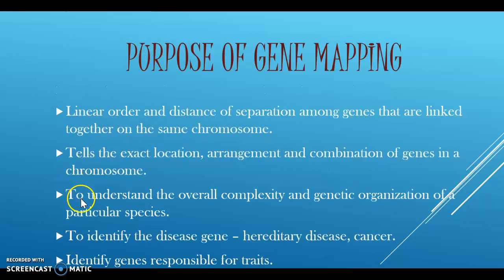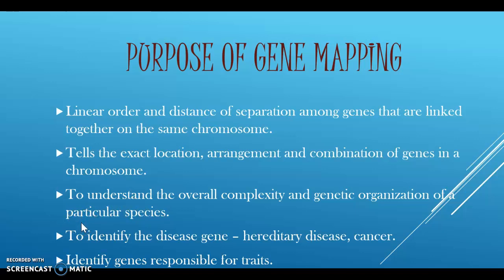The purpose of gene mapping is to determine the linear order and the distance of separation among the genes linked together on the same chromosome, based upon which the respective genes can be extracted, cloned, and the disease can be rectified. It tells the exact location, arrangement, and combination of genes in the chromosome. It is also essential for understanding the overall complexity and genetic organization of a particular species and for identifying disease genes, hereditary diseases, and cancer.